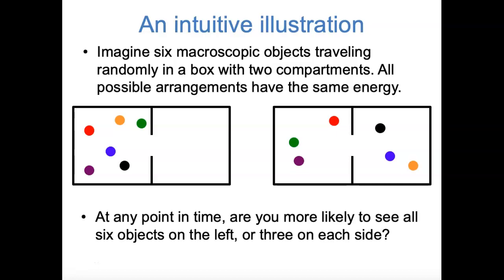It turns out that you're more likely to see three objects on the left and three on the right than all six objects on the left. The reason is that there are just more ways for it to happen. In order for all six objects to be on the left, there's really only one thing that can happen — each of those six objects happens to be on the left side. But there are many different ways to end up with three on the left and three on the right: the red, green, and purple objects on the left, or the green, blue, and orange objects on the left, and so on.